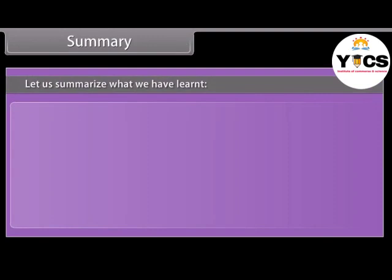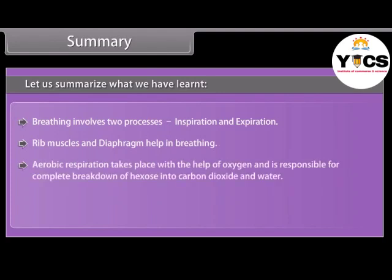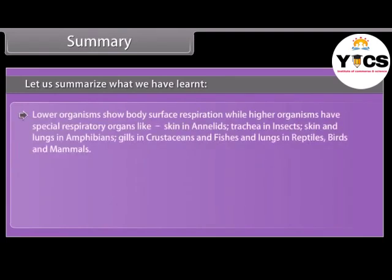Breathing involves two processes: inspiration and expiration. Rib muscles and the diaphragm help in breathing. Aerobic respiration takes place with the help of oxygen and is responsible for complete breakdown of glucose into carbon dioxide and water. Anaerobic respiration is the incomplete breakdown of substrate in the absence of oxygen. Lower organisms show body surface respiration, while higher organisms have special respiratory organs: skin in annelids, trachea in insects, skin and lungs in amphibians, gills in crustaceans and fishes, and lungs in reptiles, birds, and mammals.